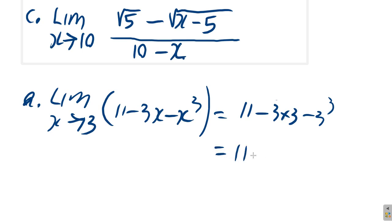That's going to be 11 minus 3 times 3 is 9, minus 3 cubed is 27. Which would give you what? 11 minus 9 is 2, so 2 minus 27 would be negative 25.